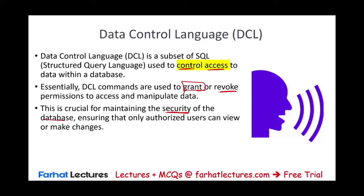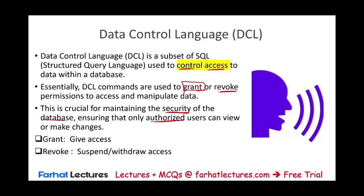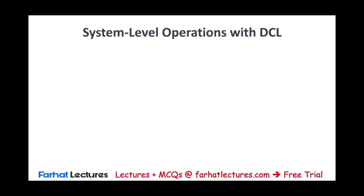This ensures that only authorized users can view or make changes as necessary. Within the data control language, we have two commands: the grant, which gives access, and the revoke, which suspends or withdraws access. The names are pretty much self-explanatory. However, within data control language, we have to be aware of system-level operations and object-level operations.